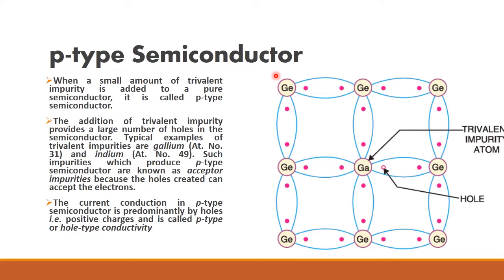P-type semiconductor means we are adding trivalent impurity to a pure semiconductor. Trivalent means an element with three valence electrons — for example, gallium, which has only three valence electrons. Since gallium's three valence electrons bond with germanium, there is a hole created. This hole is responsible for conduction, so the majority carrier in P-type semiconductor is hole. Always remember: N-type represents electrons, and P-type represents holes.